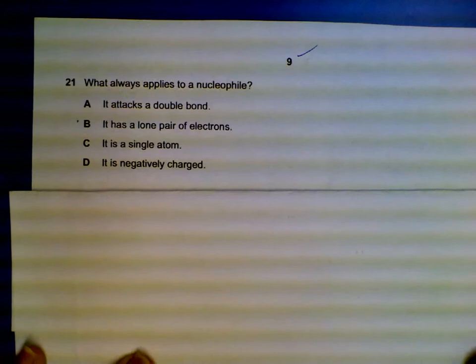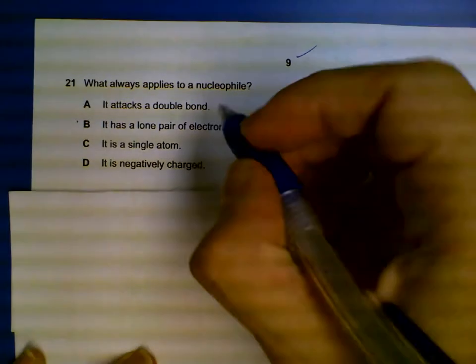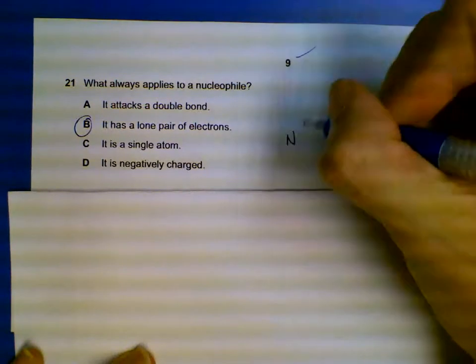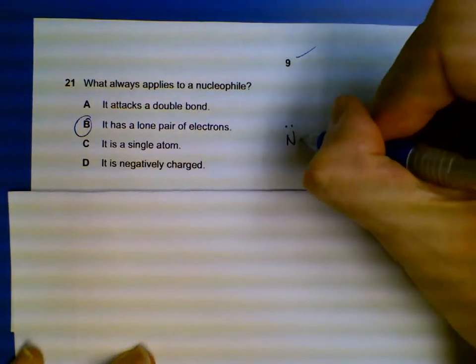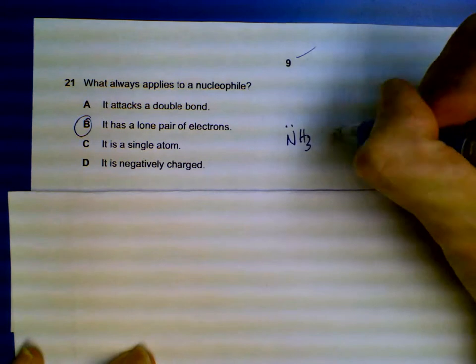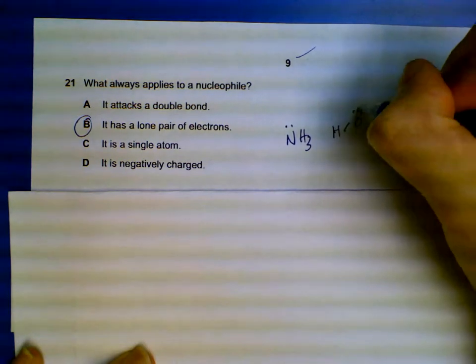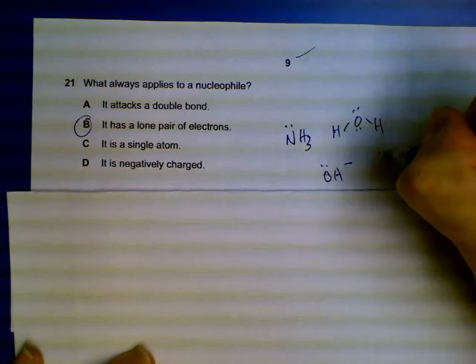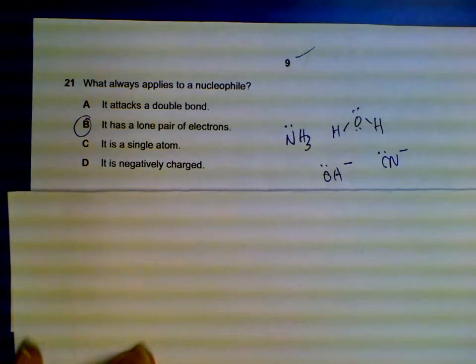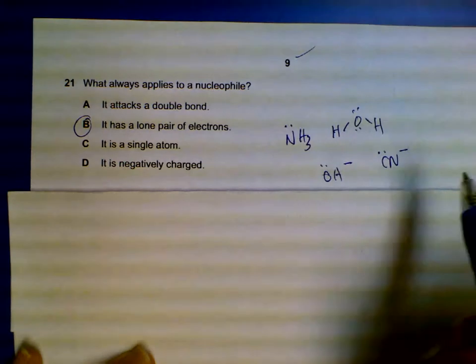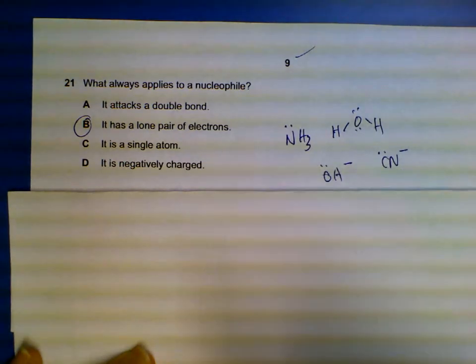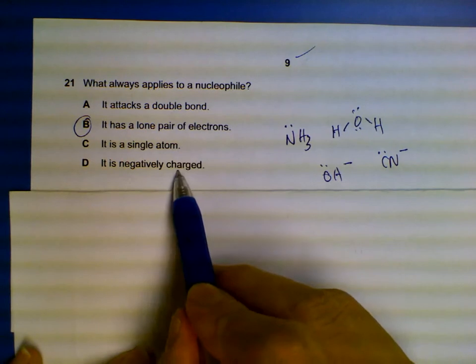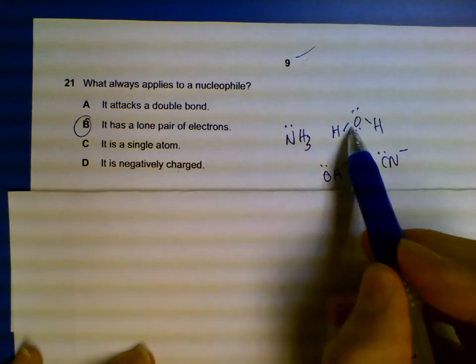Question 21: What always applies to a nucleophile? A nucleophile must have a lone pair of electrons - things like ammonia, water, hydroxides, or cyanide. They must have a lone pair of electrons so they will seek out regions that are positively charged. They do not necessarily have to be negatively charged - you can see we can have neutral molecules also.